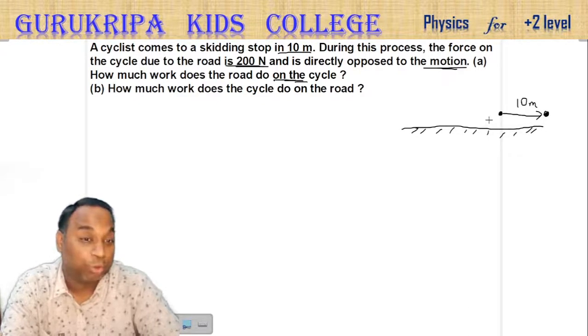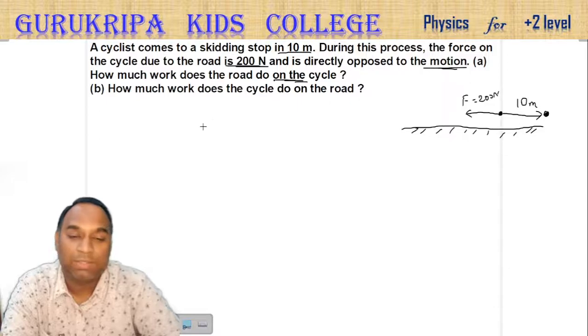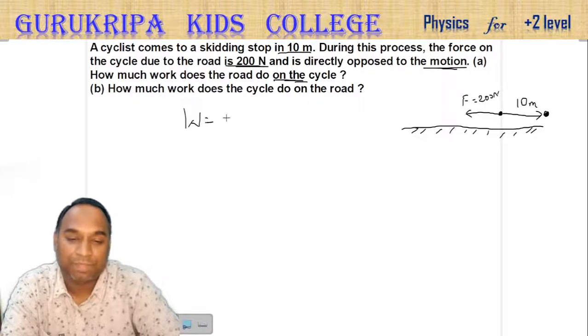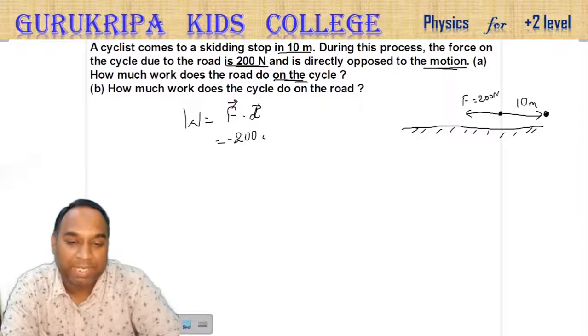The force on the cycle F is equal to 200 newtons. Work is force dot displacement. For vectors, the force is 200 newtons, negative 200 newtons i cap.